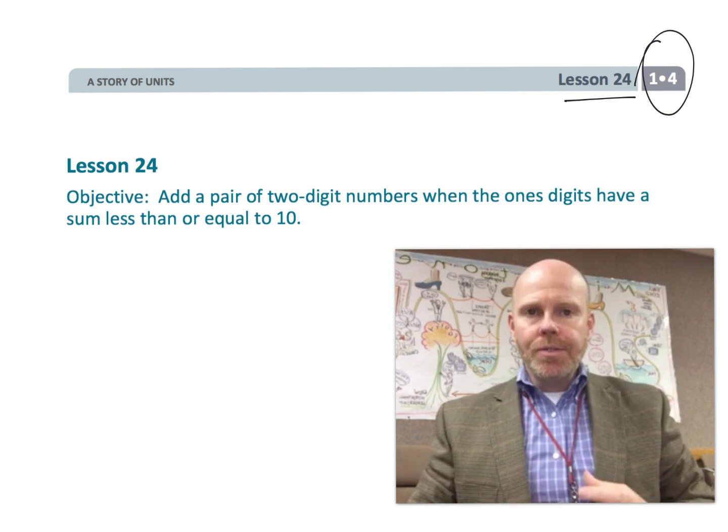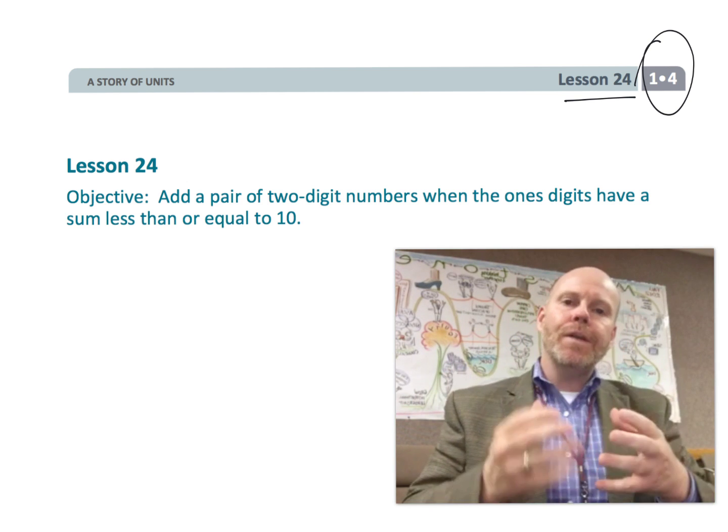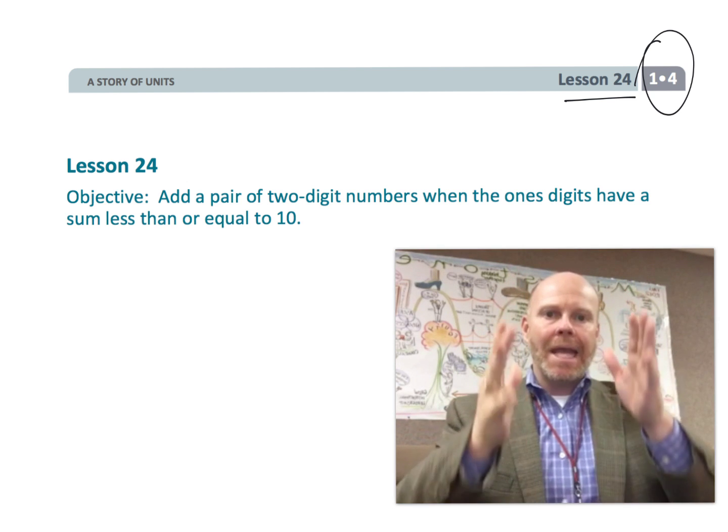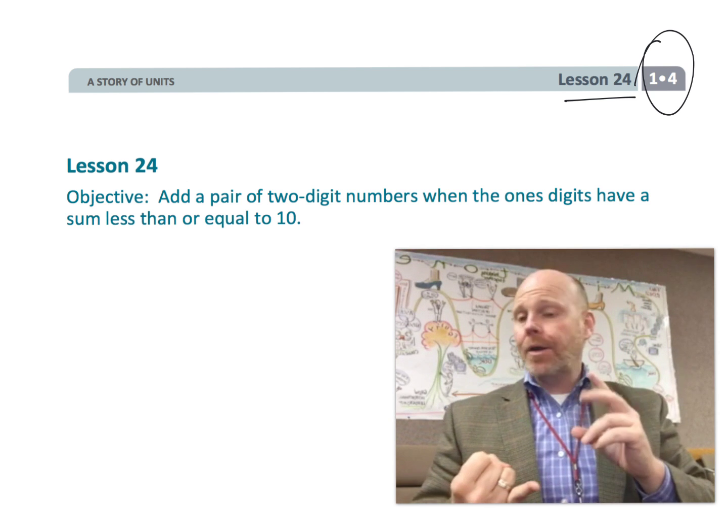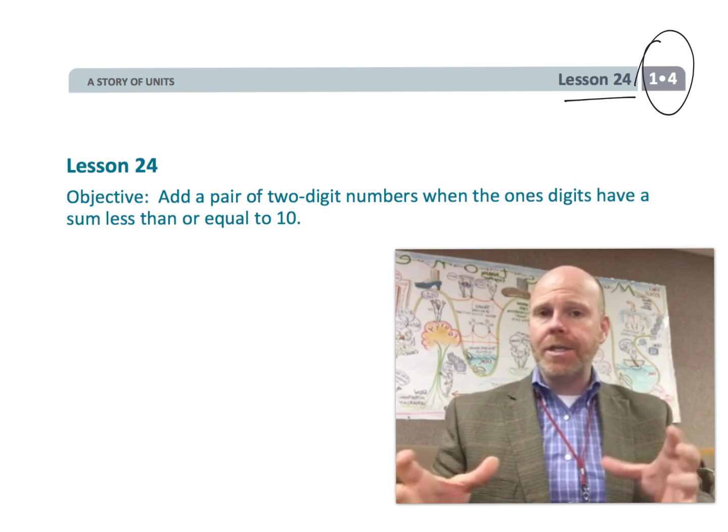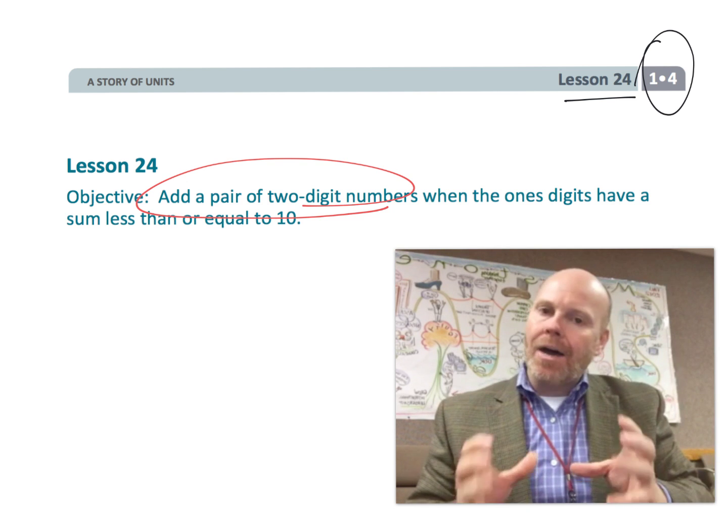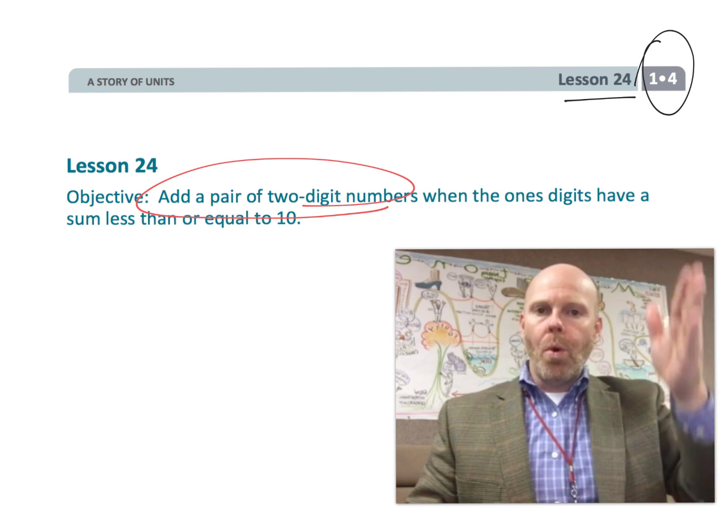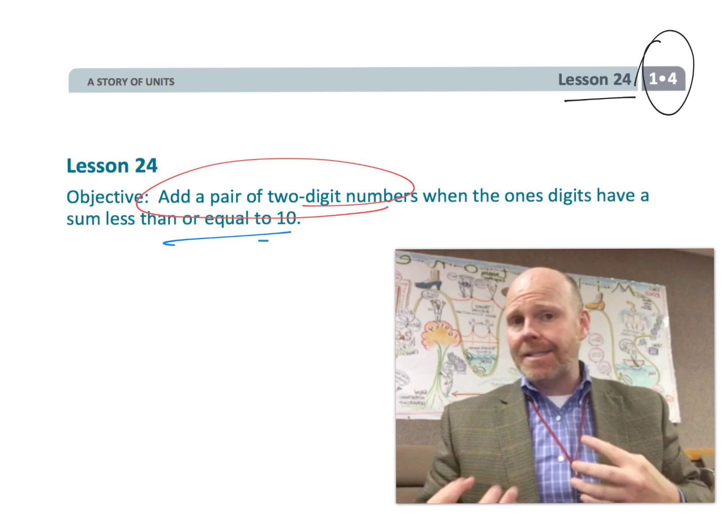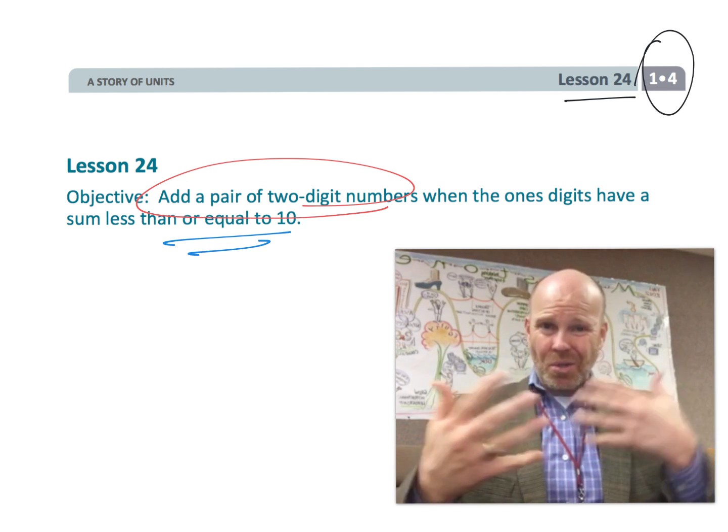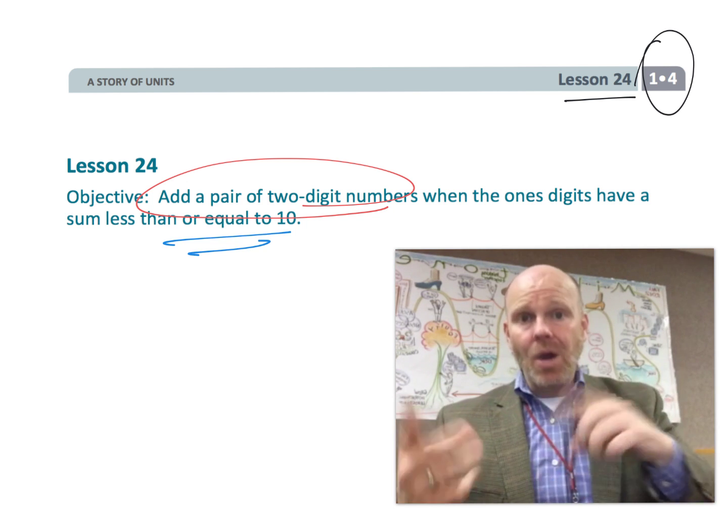And in this lesson, students are going to begin moving towards that standard algorithm where they're going to be adding a pair of two-digit numbers. The key on these, though, is the ones digits are always going to be less than 10. So in adult language, there is no carrying over.